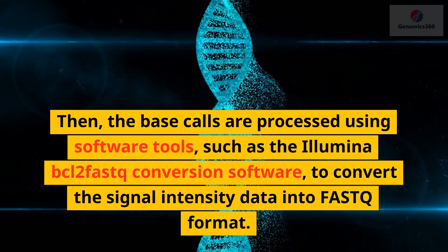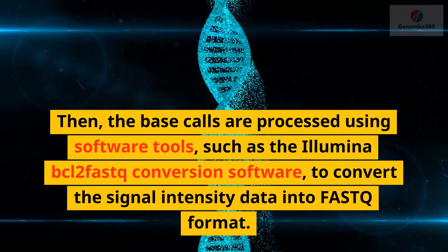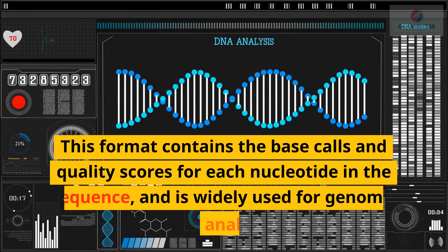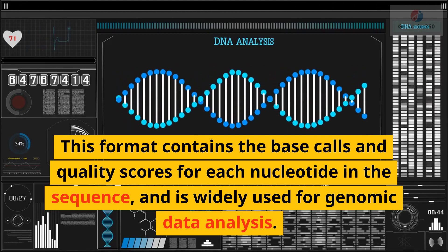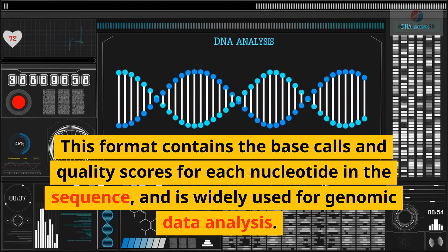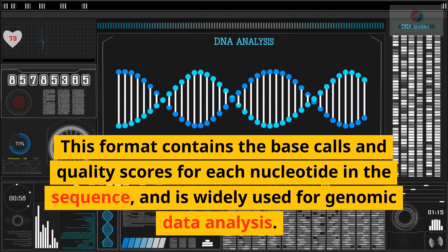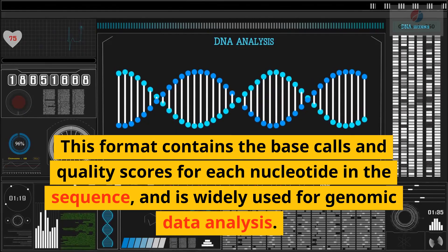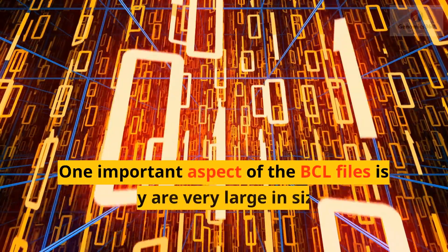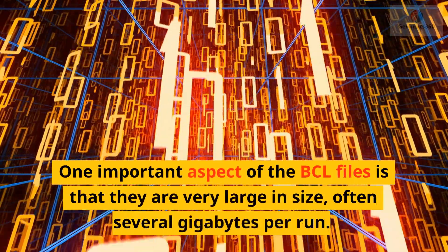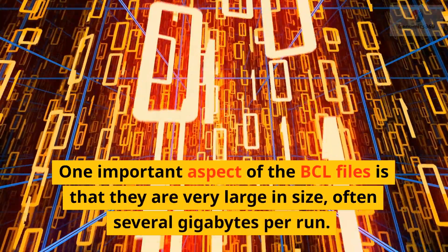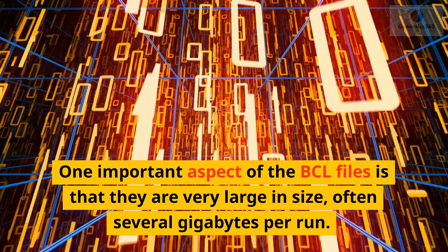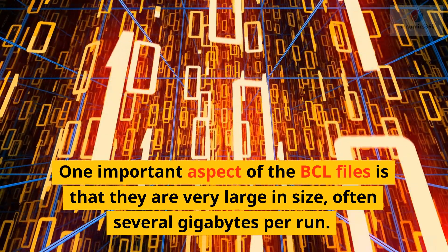to convert the signal intensity data into FASTQ format. This format contains the base calls and quality scores for each nucleotide in the sequence, and is widely used for genomic data analysis. One important aspect of the BCL files is that they are very large in size, often several gigabytes per run.